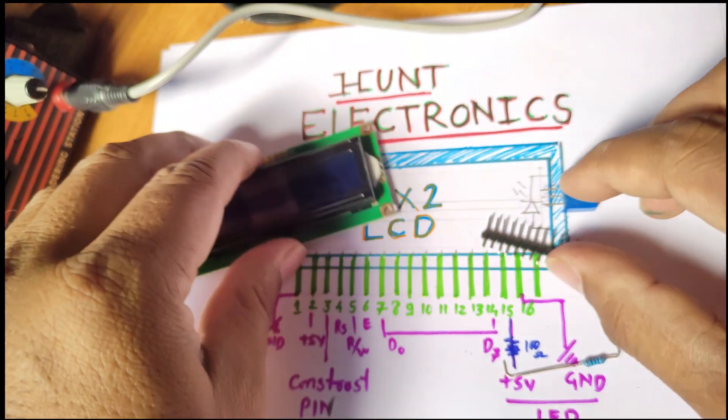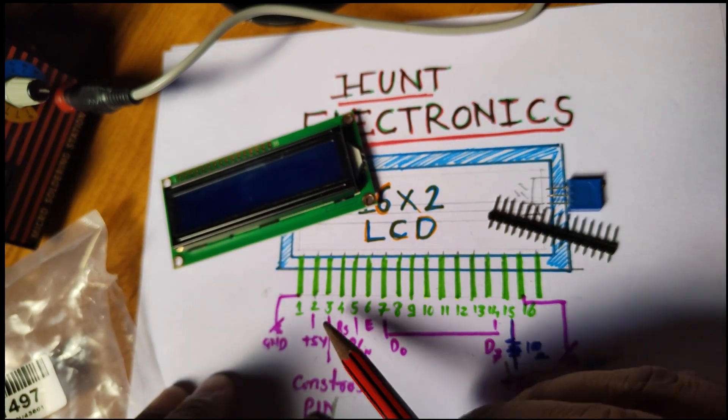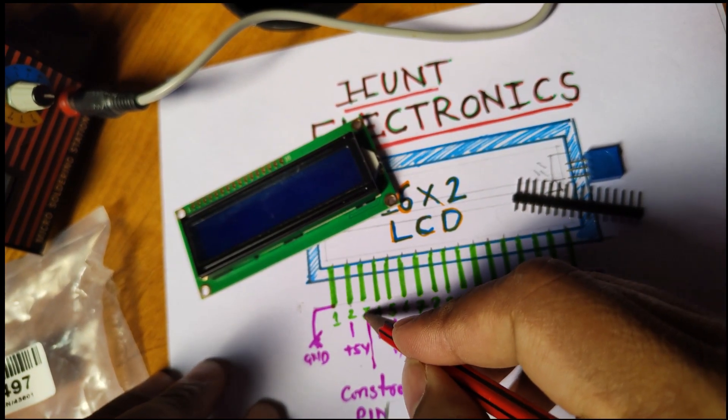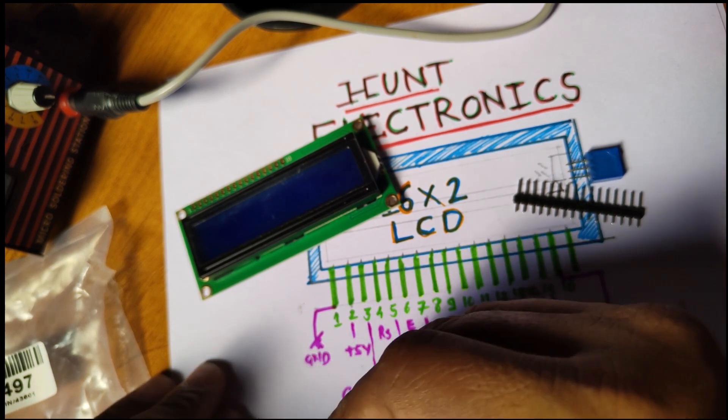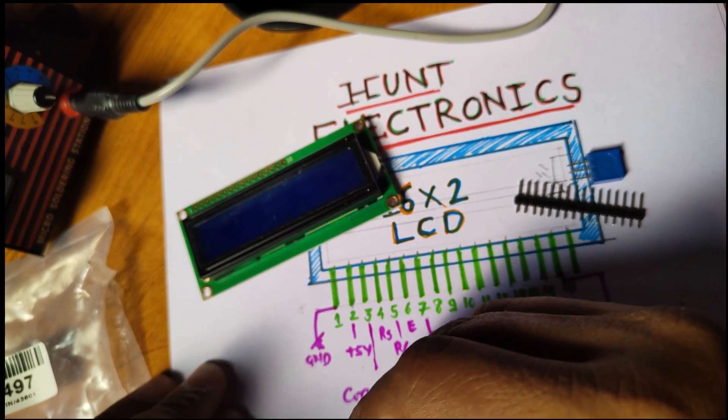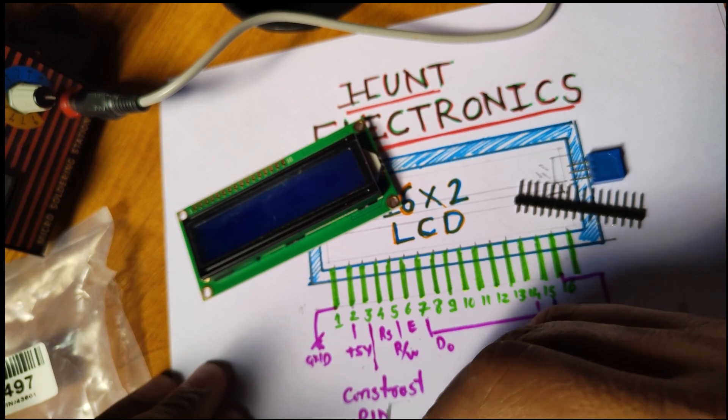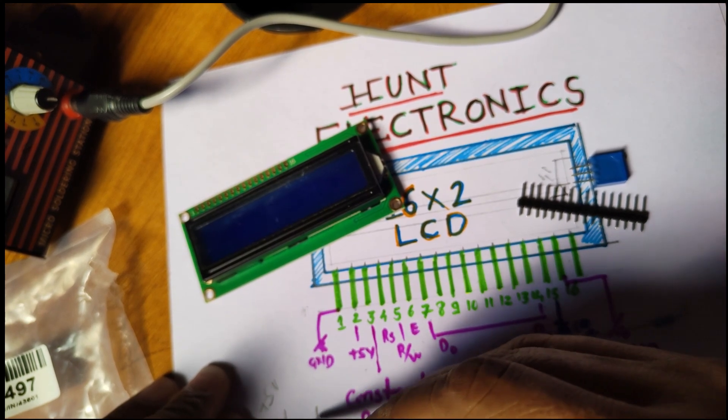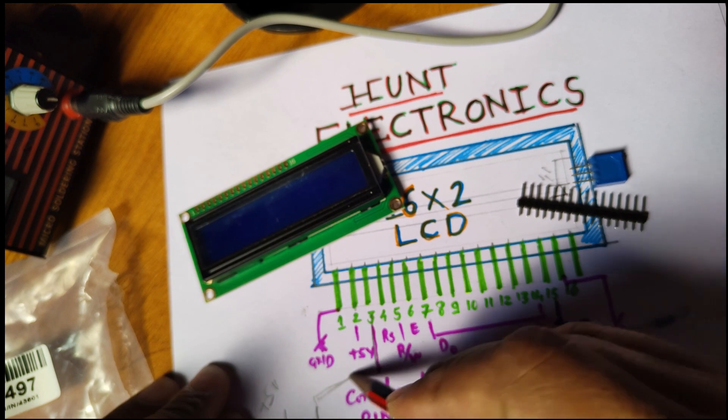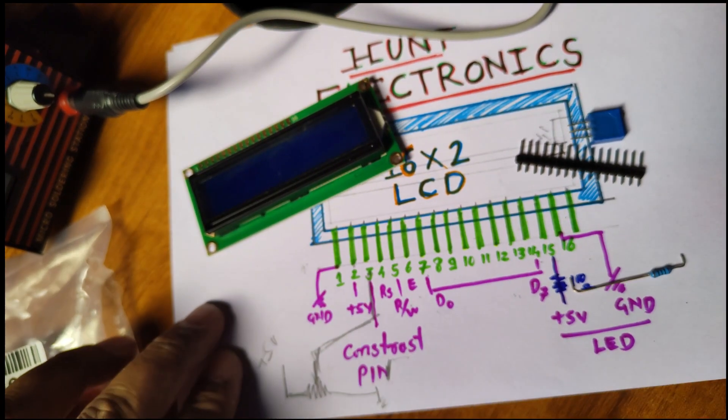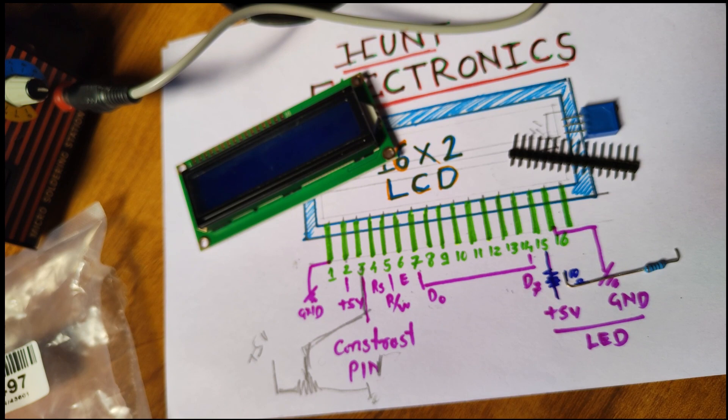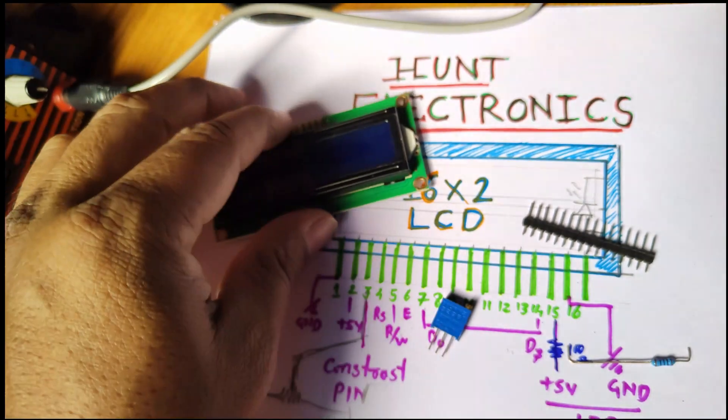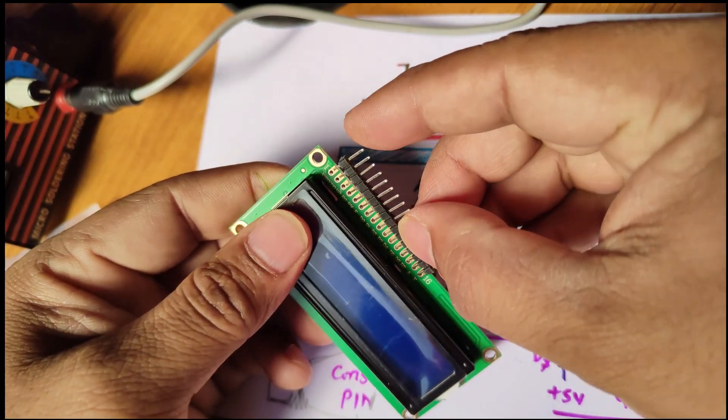We required one potentiometer or preset. At pin number three, one side of the preset should be ground, one side should be connected to plus 5 volt, and the center pin should be connected to pin number three. We have got one potentiometer, so let us go for the soldering.